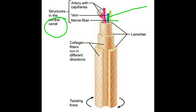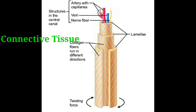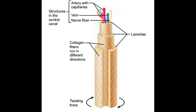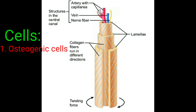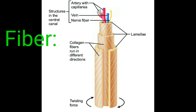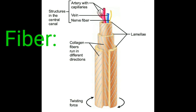The Haversian canal is the central canal, and surrounding it are some lamellae — lamellae means layers of connective tissue. Bone is a connective tissue, and connective tissue is made up of three things: cells, ground substance, and fibers. The cells are four types: osteogenic cells, osteoblast cells, osteocyte cells, and osteoclast cells. The fibers are mainly type one collagen fibers, synthesized mainly by osteoblast cells, and to a lesser extent type five collagen is also found in bone matrix.